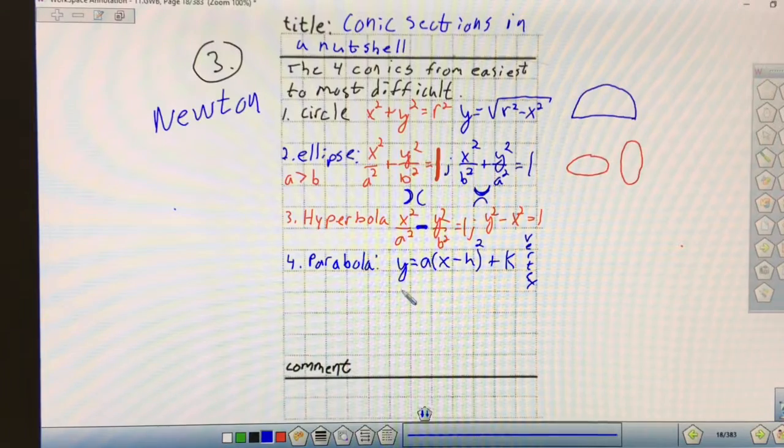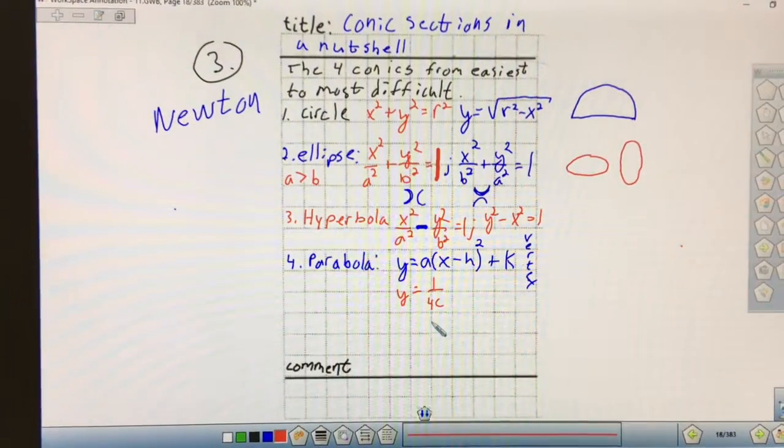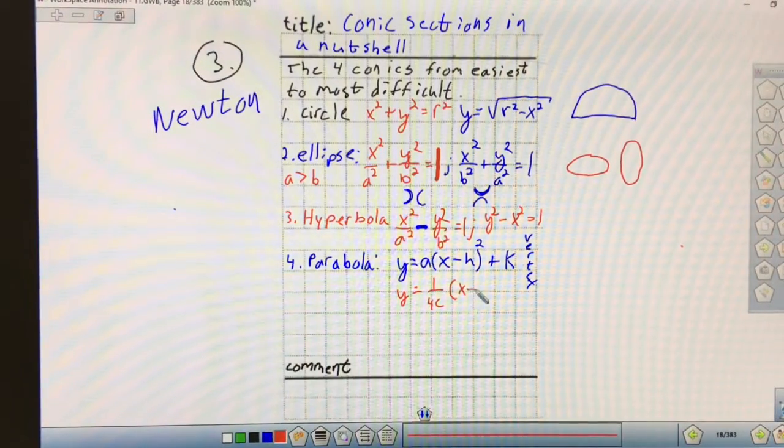Now, here comes the college equation. Y equals one over four C, and C is the distance from the vertex to the focus. This is a little tricky. Then it goes back into vertex form: (X minus H) squared plus K.